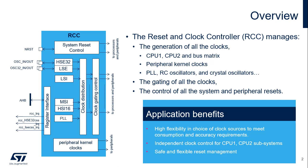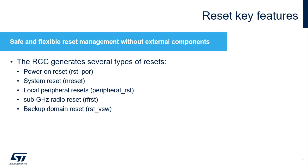The RCC provides high flexibility in the choice of clock sources, which allows the system designer to meet both power consumption and accuracy requirements. The numerous independent peripheral clocks allow a designer to adjust the system power consumption without impacting the communication baud rates, and also to keep certain peripherals active in low-power mode. Safe and flexible reset management without any need for external components reduces application costs. The RCC manages several types of resets: the power reset, the system reset, the local peripheral resets, the sub-gigahertz radio reset,